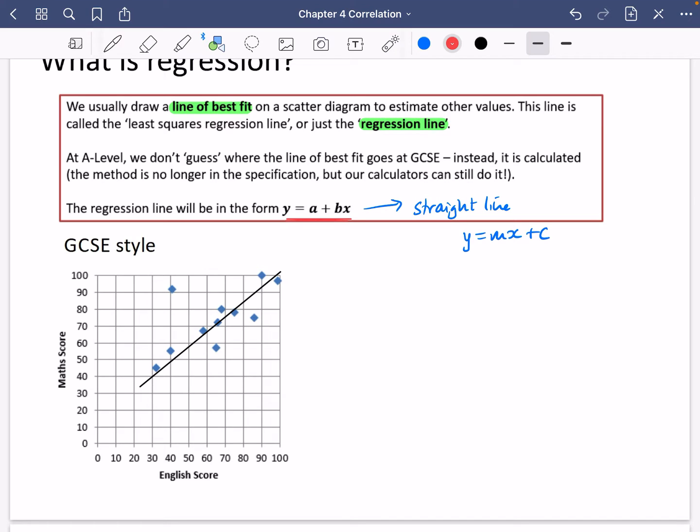How do we use it at GCSE? Well, we would use it to make predictions. And we should really only be using this to make predictions about the independent variable along the bottom. For example, let's say that somebody got a score of 50 in English and they missed the maths test. So we want to predict the maths test for them.